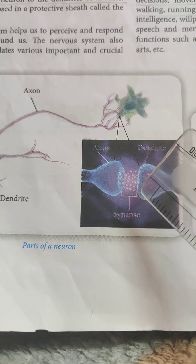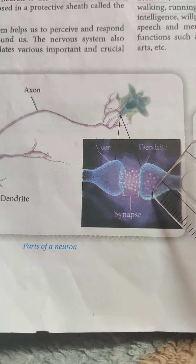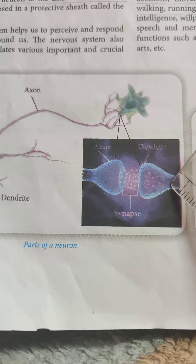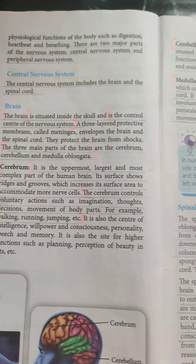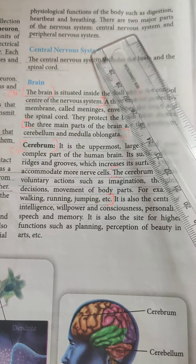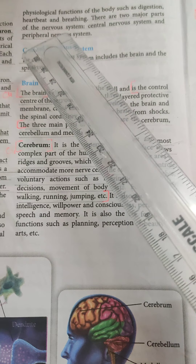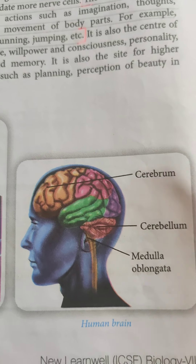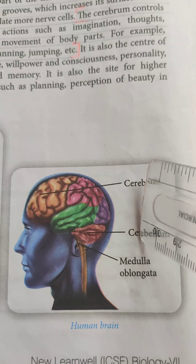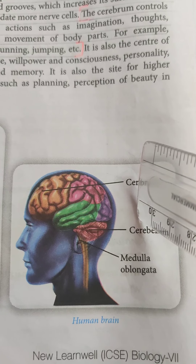Messages are transmitted at the synapse from the axon of one neuron to the dendrite of another neuron. Now we come to the nervous system. There are two major parts: central nervous system and peripheral nervous system. We will begin with the central nervous system, which includes the brain and the spinal cord.